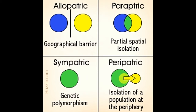Allopatric speciation is regarded as the most common type of speciation. It involves the physical separation of a species into two groups. This may occur due to climatic changes, movement of tectonic plates leading to the fragmentation of a land mass, eruption of a land mass, formation of waterways, or the presence of an impassable mountain range.